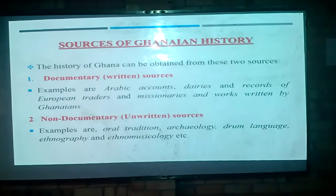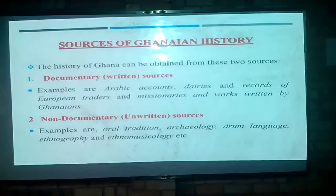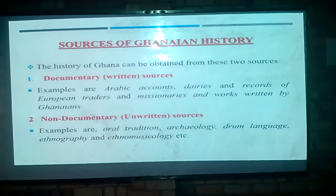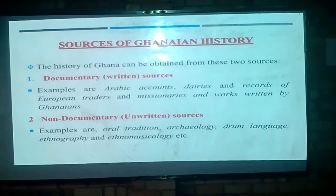We can also call the documentary sources 'written sources' and the non-documentary sources 'unwritten sources.' Examples of documentary sources include Arabic accounts — Muslims or Arabs who came around and documented what they saw — as well as diaries of important people, records of European traders and missionaries, and works written by Ghanaians. You can also study the history of Ghana through oral tradition, archaeology, drum language, ethnography, and ethnomusicology.